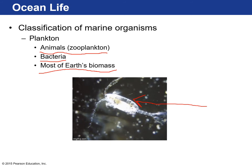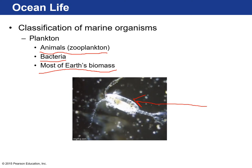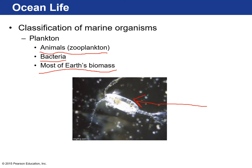Zooplankton and phytoplankton make up the majority of Earth's biomass. Even though these organisms are very tiny, there are billions of them all over the surface of the ocean — which covers about 71 percent of Earth's surface. There are trillions of these organisms, and if you were to weigh them all, the estimate is that they would weigh more than all other organisms on Earth.